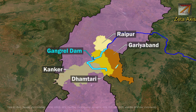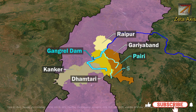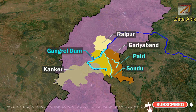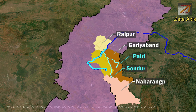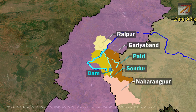In Gariyaband district, Peri river meets Mahanadi river. The Peri river originates within Gariyaband district of Chhattisgarh. Sondur river, which is a tributary of Peri river, meets Peri river in Malgaam of Gariyaband district. The Sondur river originates from Navurangpur district of Odisha, and Sondur Dam is built on the Sondur river in Dhamtari district of Chhattisgarh.